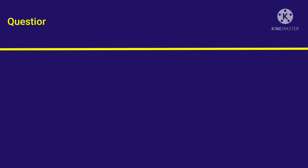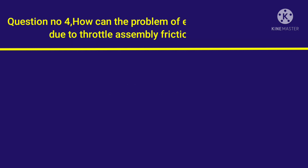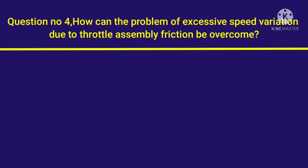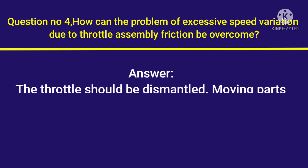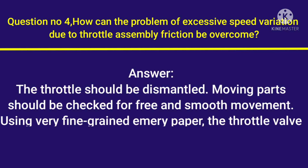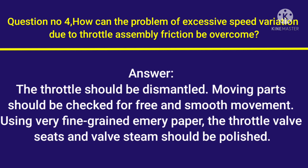Question number 4: How can the problem of excessive speed variation due to throttle assembly friction be overcome? Answer: The throttle should be dismantled. Moving parts should be checked for free and smooth movement. Using very fine-grained emery paper, the throttle valve seats and valve stem should be polished.